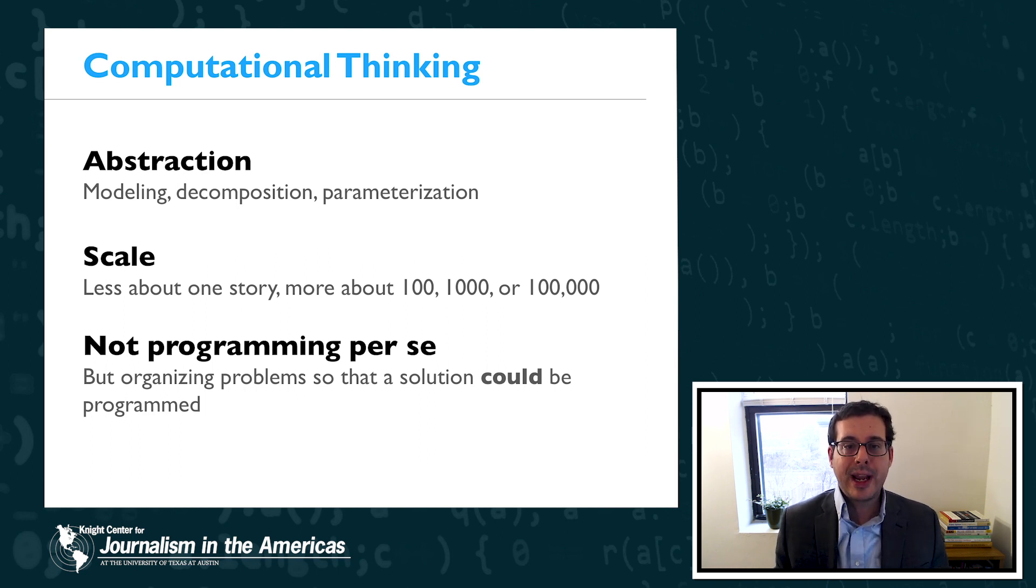But really what abstraction enables is this idea of scale. This is the main benefit of digital computing. So again it's about being able to repeatedly solve a problem over and over and over again. So we can talk about generating a hundred, a thousand, or a hundred thousand stories instead of just one story.